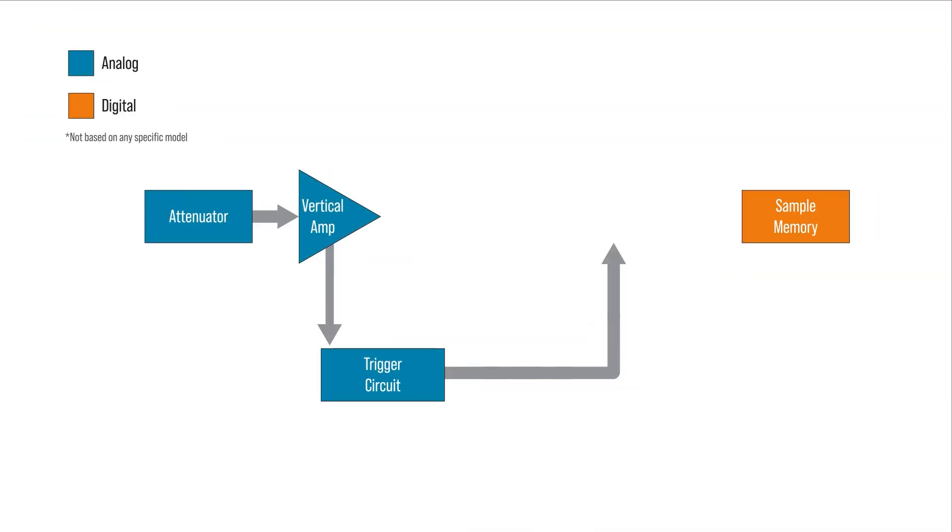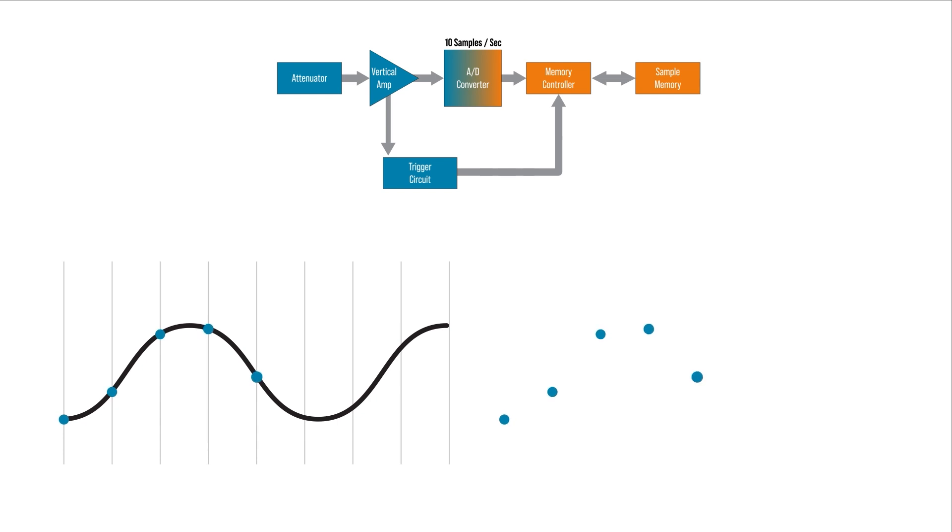Inside of a digital oscilloscope is an analog to digital converter connected to a memory controller. The ADC usually runs at a constant sample rate. If the controller outputs the data as is from the ADC, it is in sample mode. Sample mode can decimate the samples so that we get fewer samples for the waveform, which is very useful for slower sweep speeds.